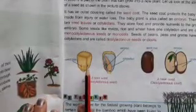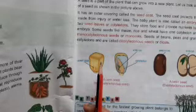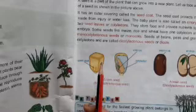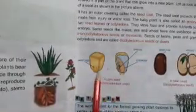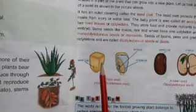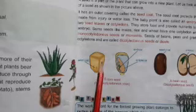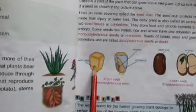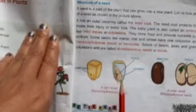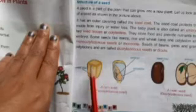A seed is a part of the plant, just like flowers and fruits. It can grow into a new plant. As shown in the picture, most plants grow from seeds. A seed has an outer covering called the seed coat, which protects the baby plant inside.